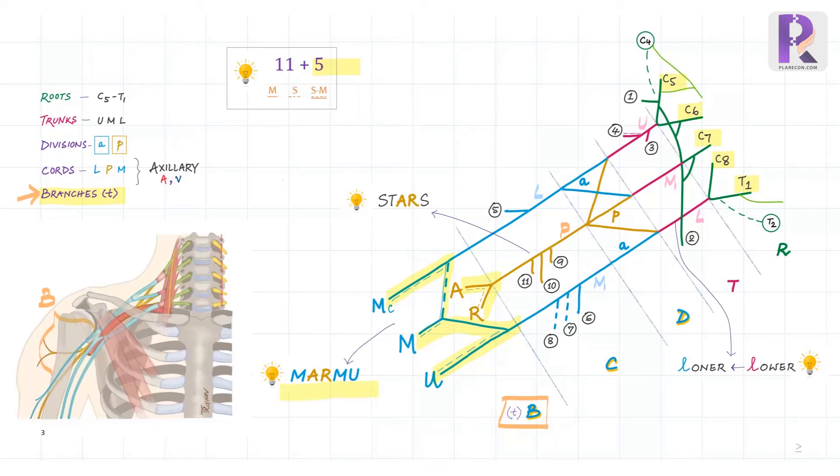MARMU is a good mnemonic for the terminal branches. In this line diagram, the motor branches are drawn as solid line, the sensory as dashed line, and sensory motor as mixed solid with dashed line. Note that all the five terminal branches, also called peripheral nerves, are mixed sensory motor nerves.